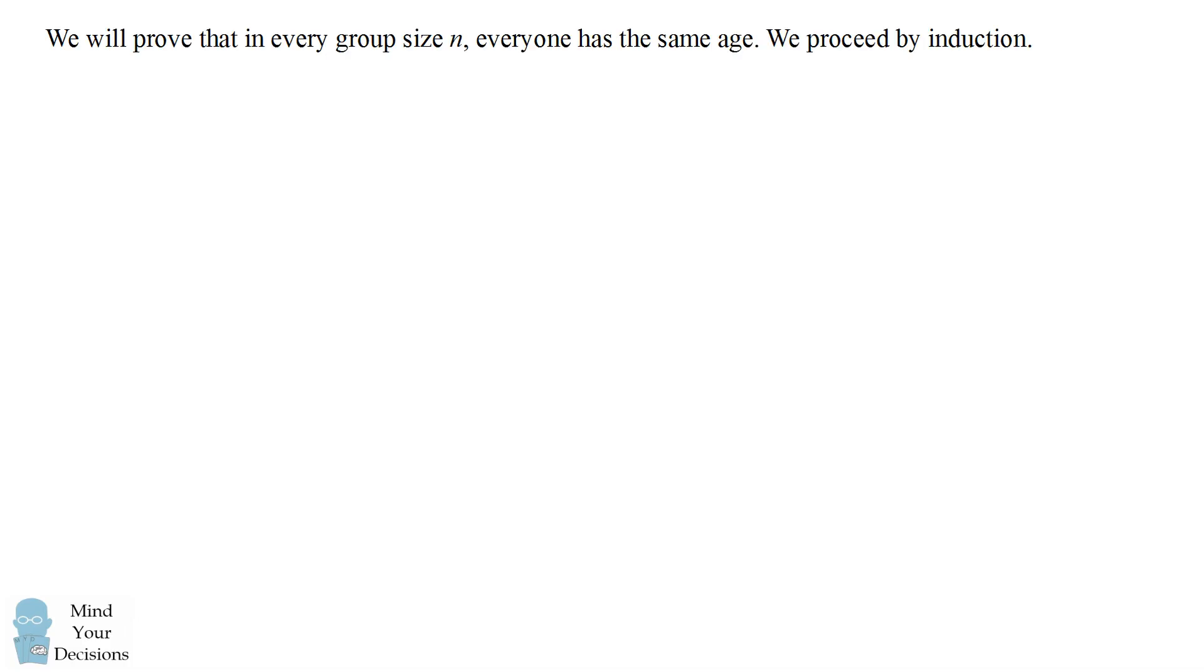We'll now get to the thing I want to show you in this video, which is we will prove that in every group size n, everyone has the same age. This will be a false proof, but we're going to proceed by induction. And the challenge for you is to figure out where the mistake in this proof is.